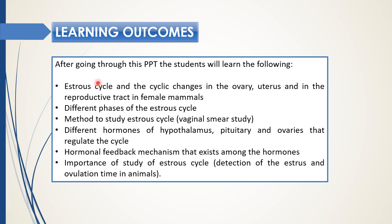Students will learn about changes in the reproductive tract in female mammals, the different phases of the cycle, and the method of studying the cycle. They will know about hormones from different endocrine glands like the hypothalamus, pituitary, and ovaries, as well as the regulation of the cycle, the hormonal feedback mechanism among the hormones, and the importance of studying the estrus cycle.